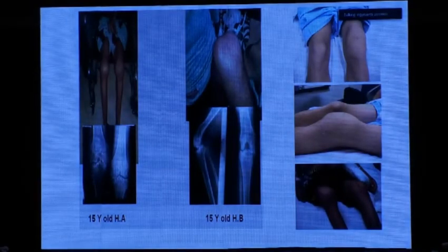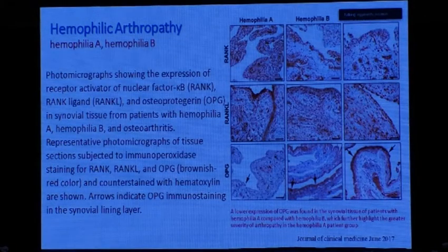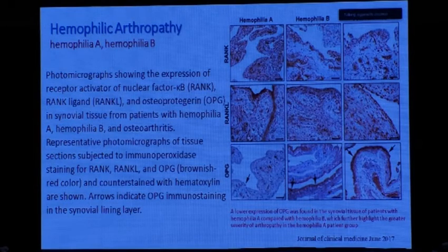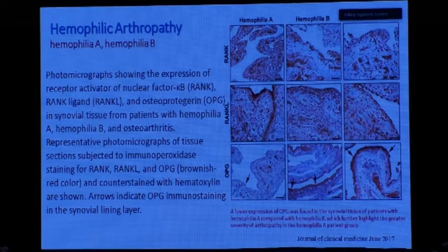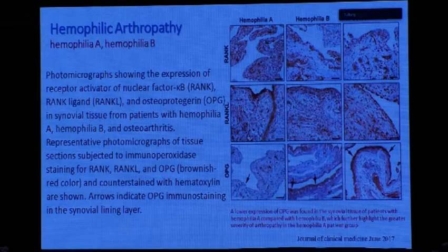Joint affection in Hemophilia A is more severe than in Hemophilia B. This is because the biomarker for bone biology — the balance between osteoclastic and osteoblastic activity — is more impaired in Hemophilia A. Bone resorption and articular damage are greater in Hemophilia A because the biomarker osteoprotegerin, which preserves the chondral-bone junction, is at a higher level in Hemophilia B. Therefore, joint affection in Hemophilia B, even with the same factor level and the same recurrent bleeding, is milder.